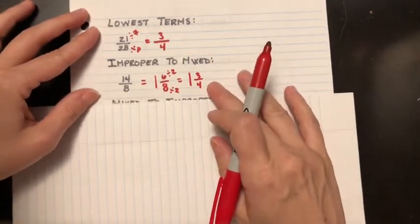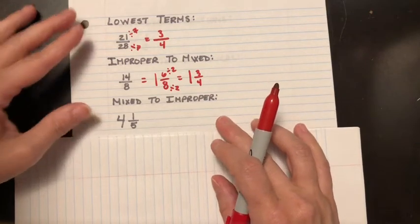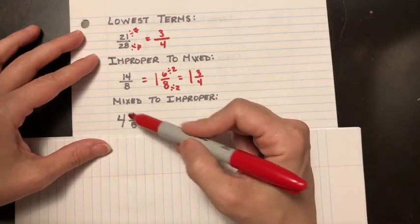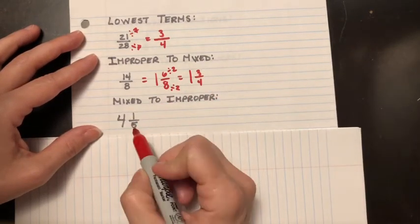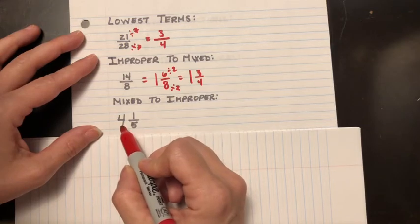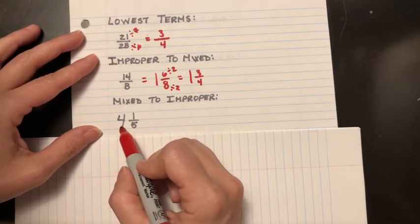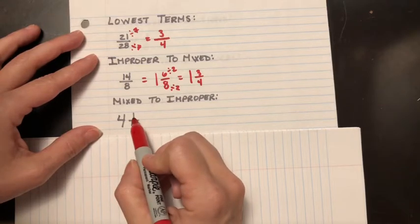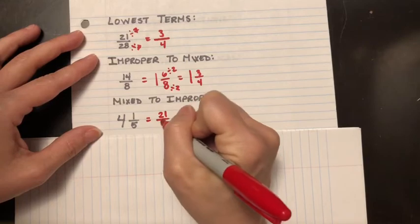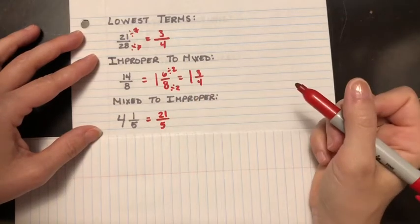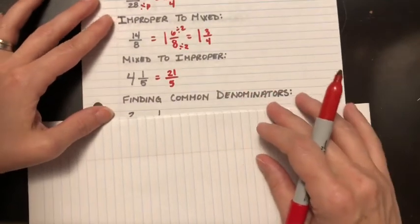What if they give it to me mixed and I need to figure that out in improper terms? Here's what you're going to do: take your bottom, your denominator, and multiply that by the whole number. In this case, it's 5 multiplied by 4, which gives me 20. Then I add my numerator, which gives me 21. So it's going to be 21 over 5. That is my mixed to improper skill.